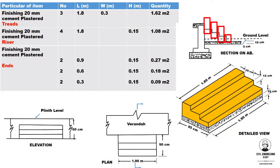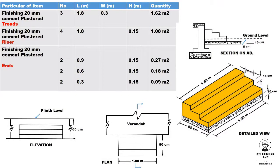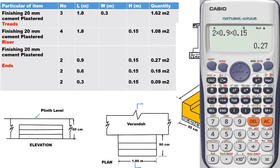Similarly, for the four risers: the length of the riser is 1.8 meter and the height of the riser is 0.15 meter. The total quantity of plaster in four risers is 4 × 1.8 × 0.15, equal to 1.08 square meter. For the two ends of the steps, the quantity of plaster is 2 × 0.9 × 0.15.